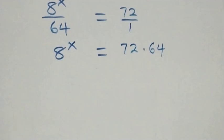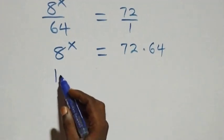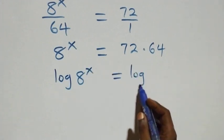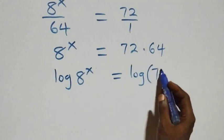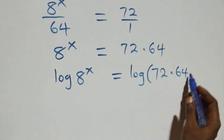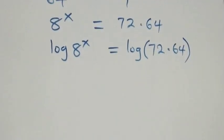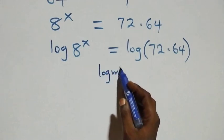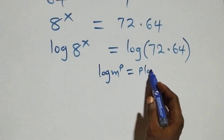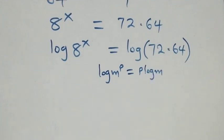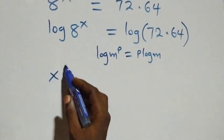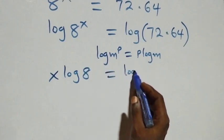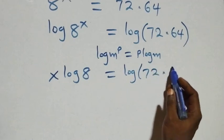We apply the log on both sides: log of 8 raised to power x equals log of 72 times 64. Then we apply the power law of logarithms — when we have log m raised to power p, it equals p log m — so this becomes x log 8 equals log(72 times 64).